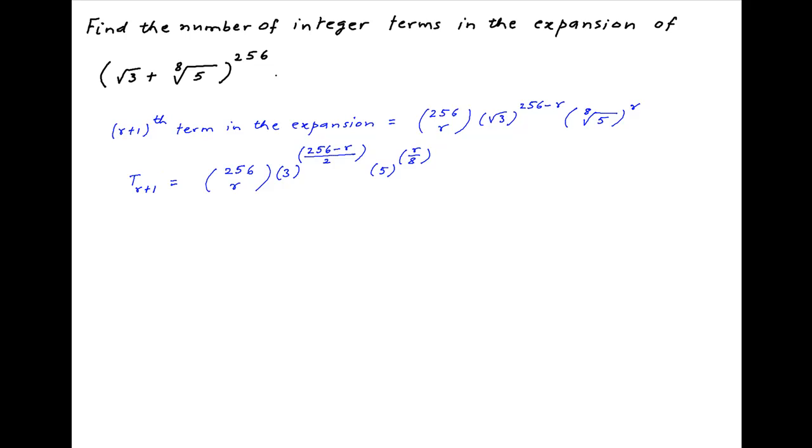Let's denote this by t_{r+1}. Now, 256 choose r is always an integer. 3^((256-r)/2) is an integer when r is a multiple of 2. And finally, 5^(r/8) is an integer if r is a multiple of 8.